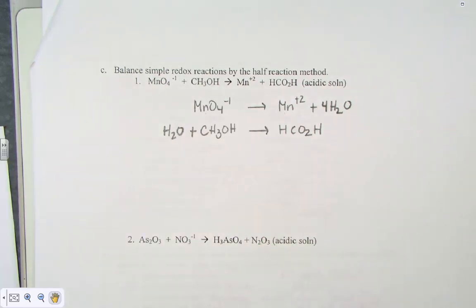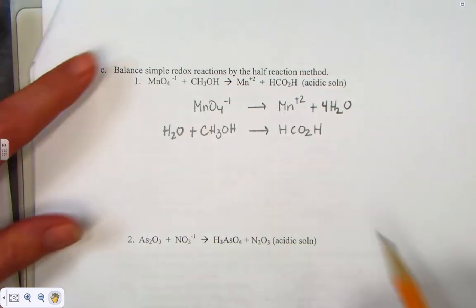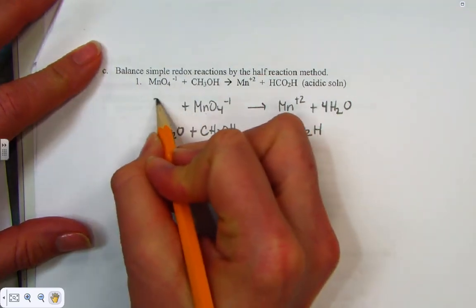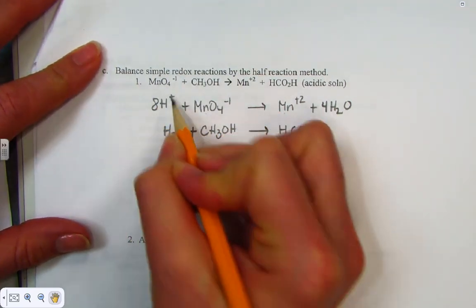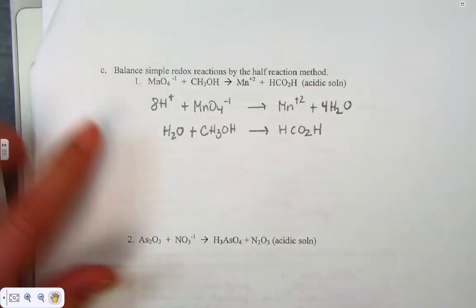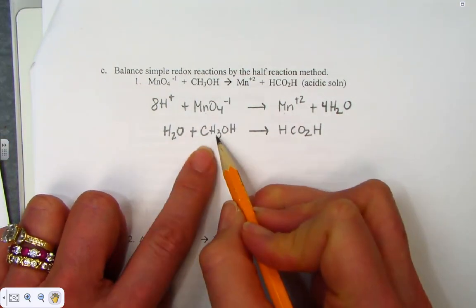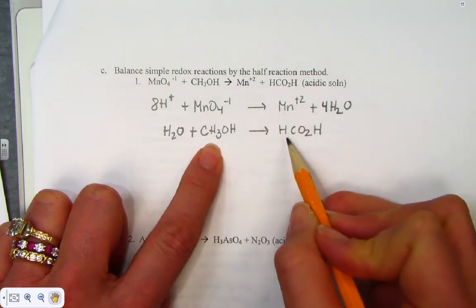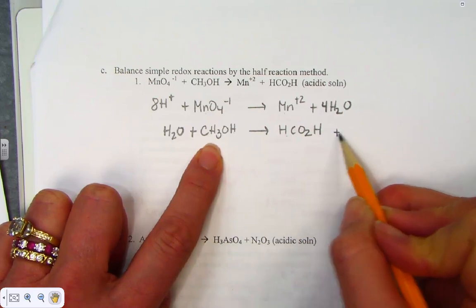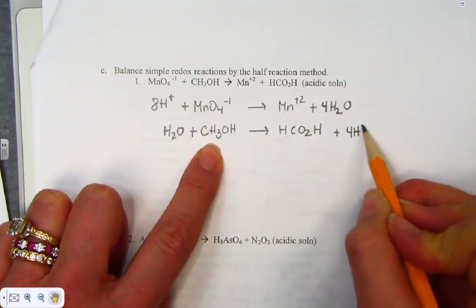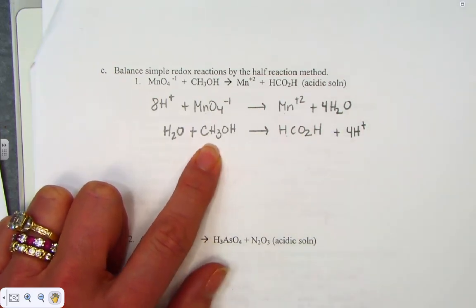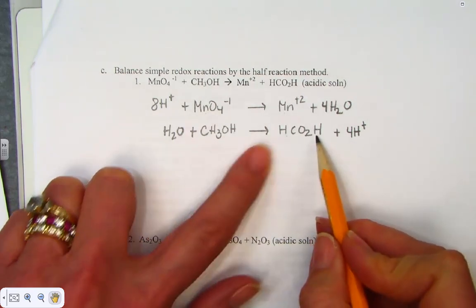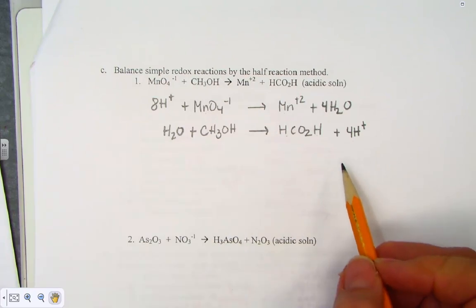We move to balancing hydrogen by adding protons in the acidic solution. In the first half-reaction there are 8 hydrogens, so we add 8 positive protons. In the second half-reaction there are 6 H's on the left and 2 on the right, so I add 4 more protons to the product side — 2 plus 4 equals 6 on each side.